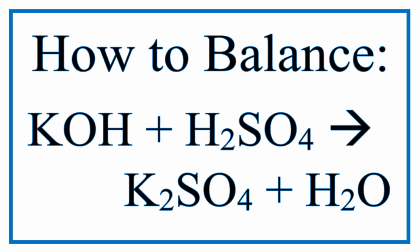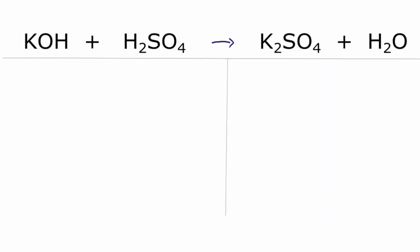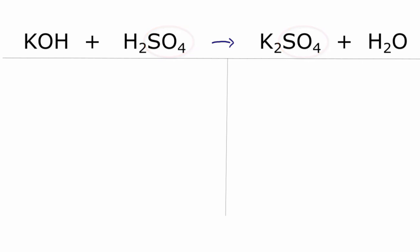Let's balance this equation. We have KOH plus H₂SO4, and that yields K₂SO4 plus H₂O. My strategy is to treat SO4 as one thing, because I have an SO4 on the reactant side and an SO4 on the product side. That makes it easier to add things up. Let's see how that looks.